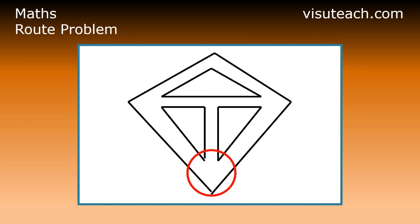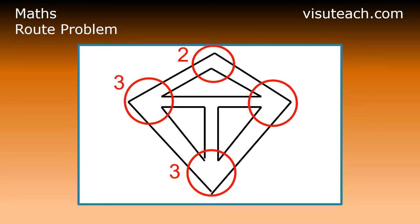Looking at the second housing estate, B, we get the following. This housing estate has four vertices of degree 3 and one vertex of degree 2. It does not have less than three vertices of odd degree, therefore it cannot be the answer.